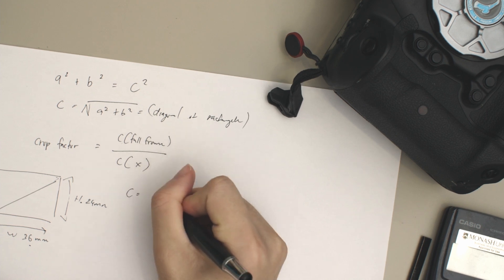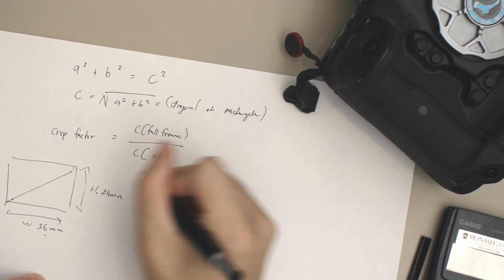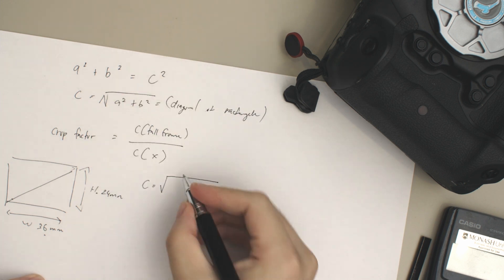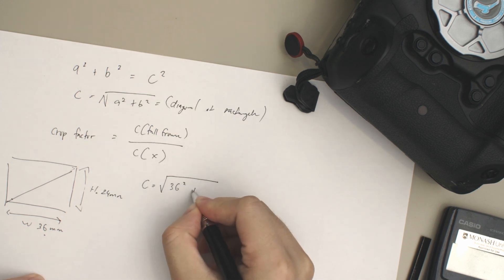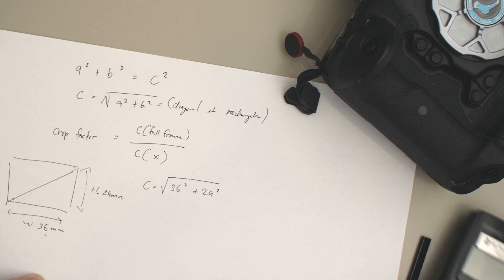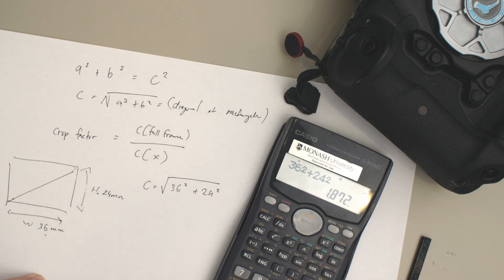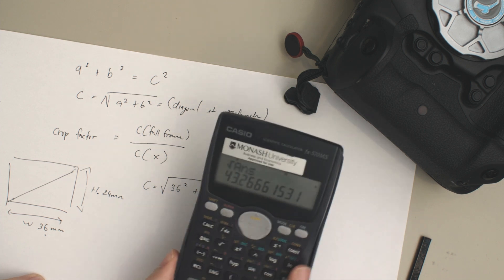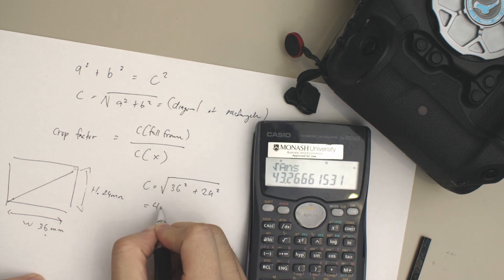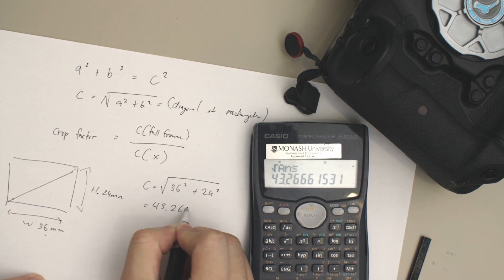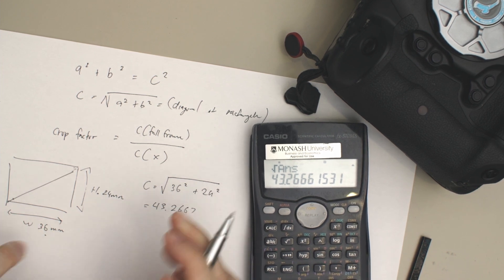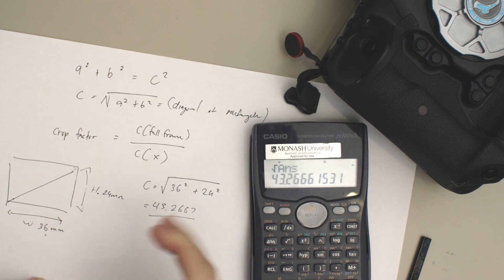So let's look at this: c equals square root of a (or b, doesn't matter) 36² + 24². We bring up our calculator right here: we type 36² + 24² equals 1872, and we just square root the answer and we get 43.267, but we're just going to round it up to two numbers—43.27. This is going to be the diagonal of a full frame sensor.